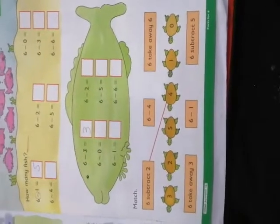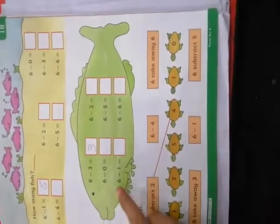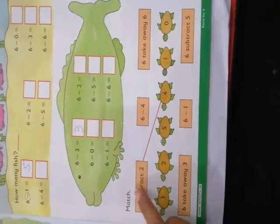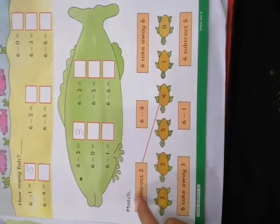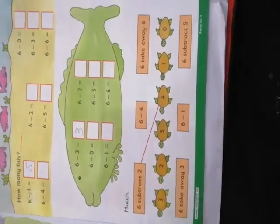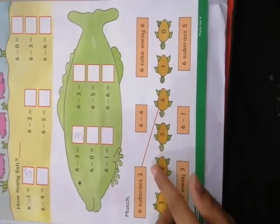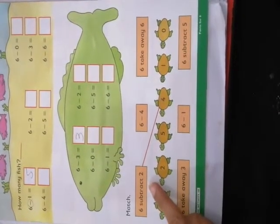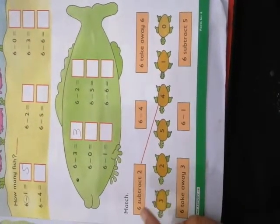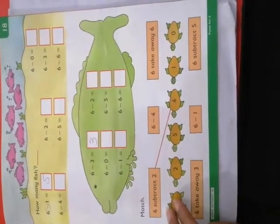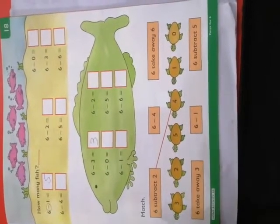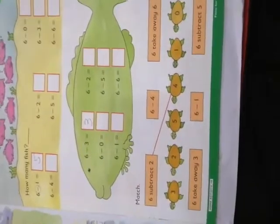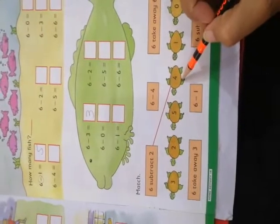This is very easy. Now, matching — how many are left? 6 subtract 2. If we have 6 fishes and we subtract 2, how many are left? 4. 4 fishes are left.